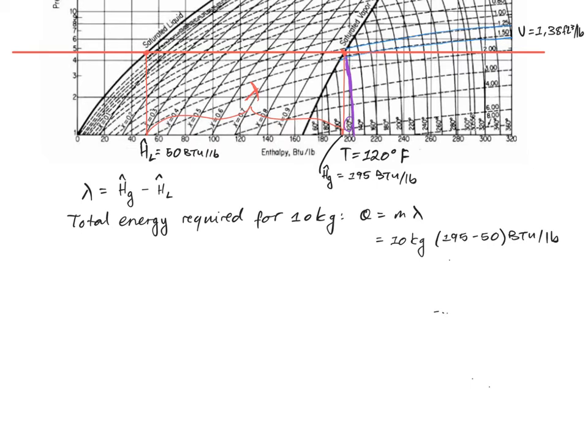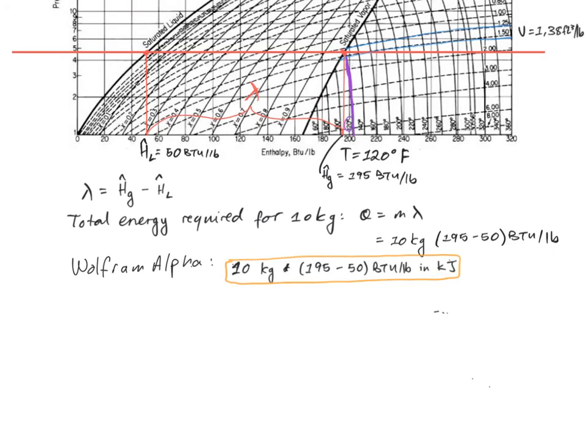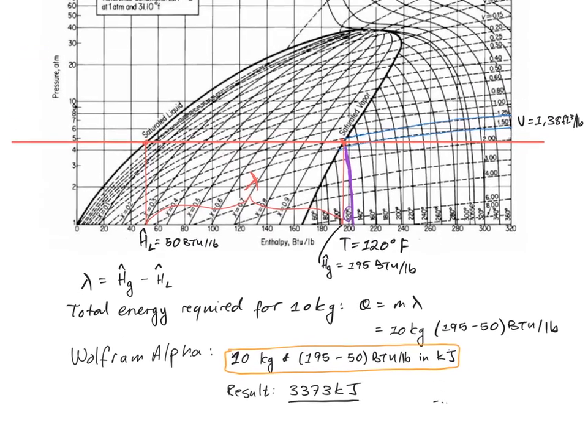So here are the numbers short the unit conversion, and in fact we can simply type into a tool like Wolfram Alpha that will allow us to type the query directly into Wolfram Alpha like this. So we simply substitute the multiplication over there and we ask for the result in kilojoules, and Wolfram Alpha will immediately spit out the results: 3373 kilojoules. And there we go, problem solved.